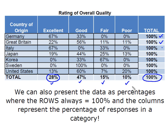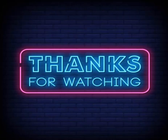So when reading your cross tab, what you have to always remember is your rows are always going to equal 100%, and the columns represent the percentage of responses in a given category. I wasn't with you long today, but as always I hope that you found this useful, and thanks for watching.